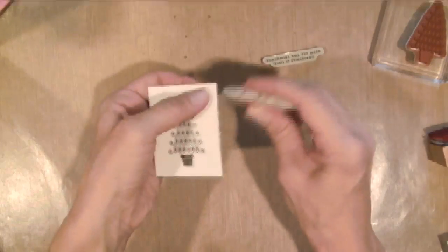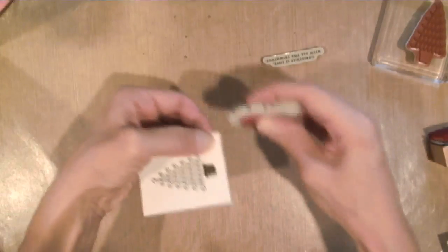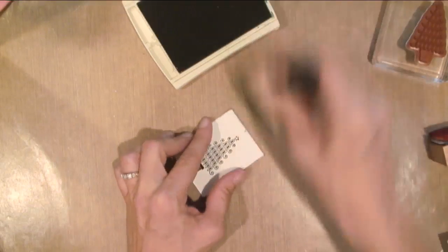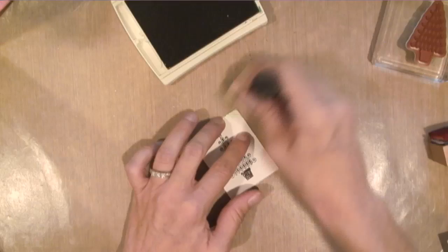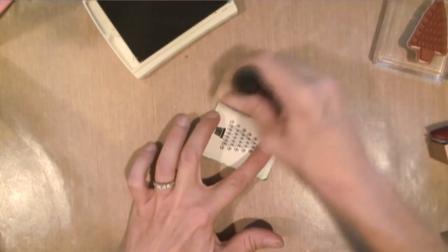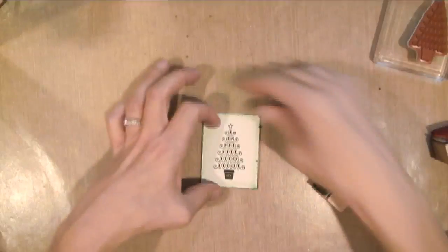This is a Tim Holtz paper distressor, and it's got blades inside those little grooves which will distress your paper. It's really easy to use, and it's a nice cool look. And this is some Garden Green ink. So when you have those distressed edges, it really darkens it up a little bit when you put some ink on it.